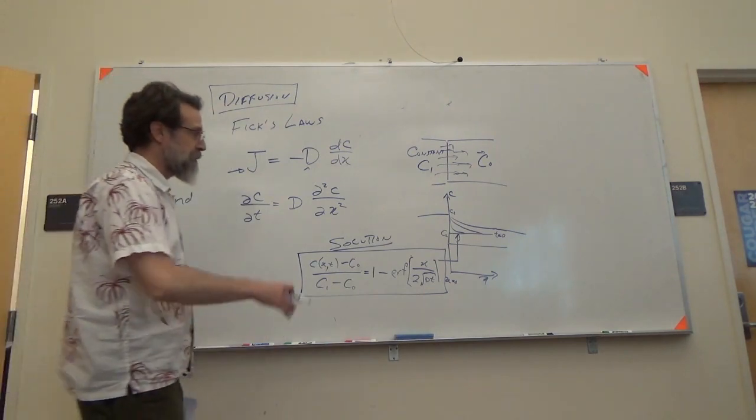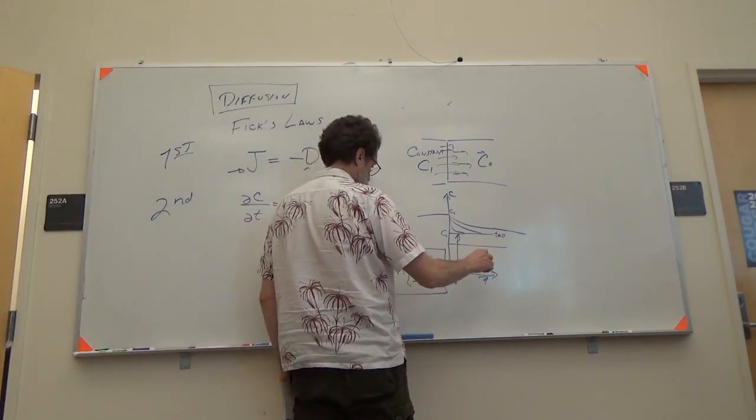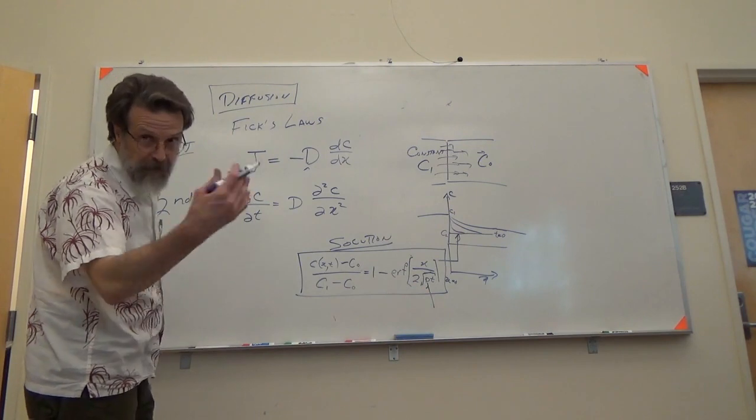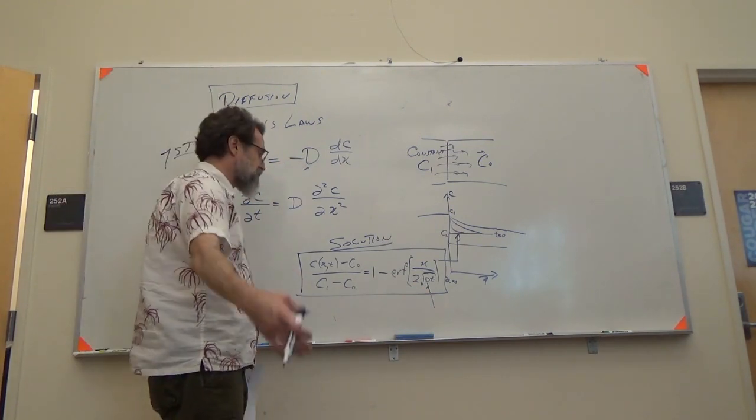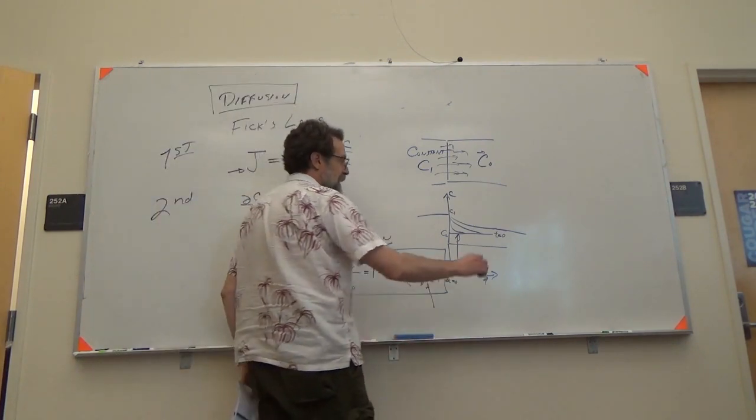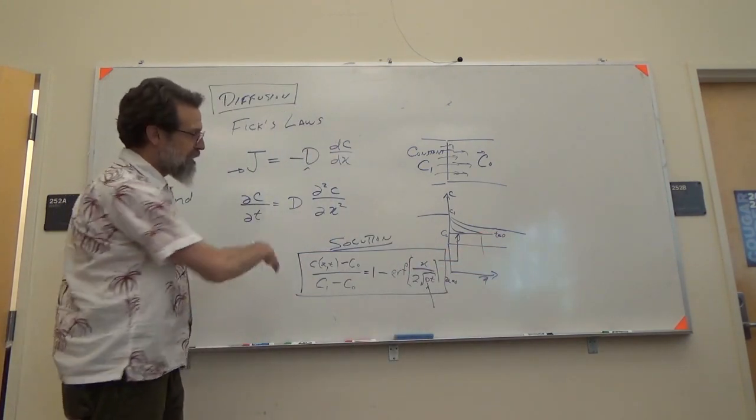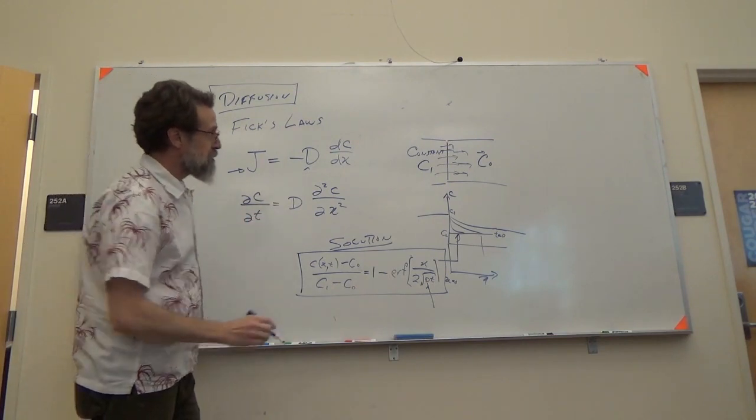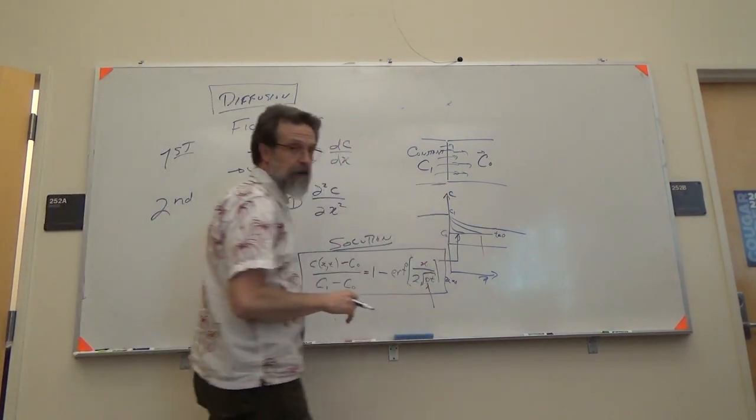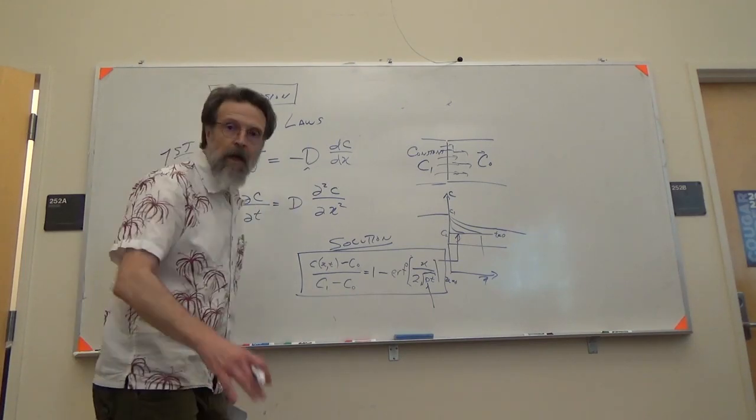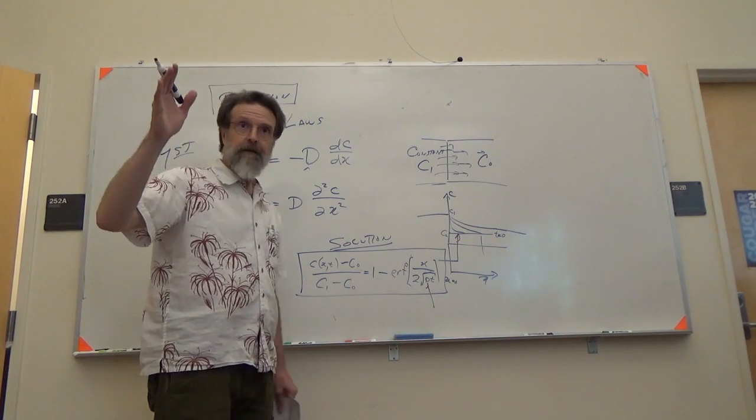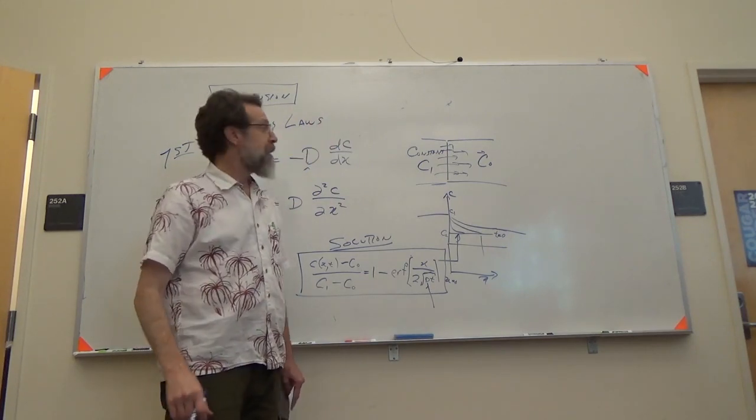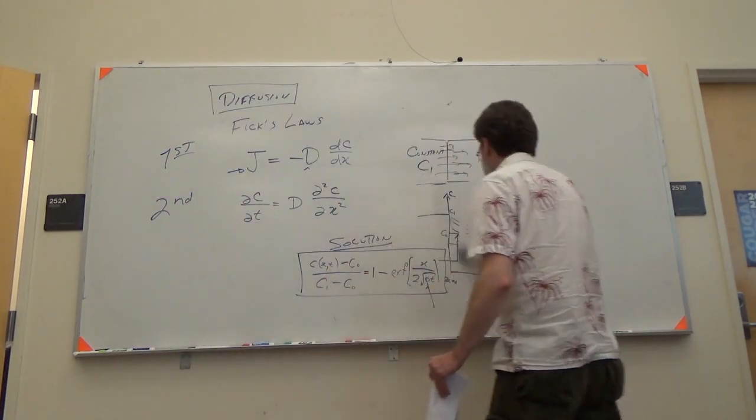And from this you can ask several questions about, given a time and a temperature. Remember, the temperature comes in through that diffusion coefficient because it's an Arrhenius expression. So given a time and a temperature, at what distance can you find a certain concentration or what have you. There's always ways that you can take this type of solution and manipulate it. It's worth pointing out that this is only the solution if you're holding the surface at a constant concentration. The reason that we're interested in this is because many of the kinetics that we're interested in are controlled by diffusion.